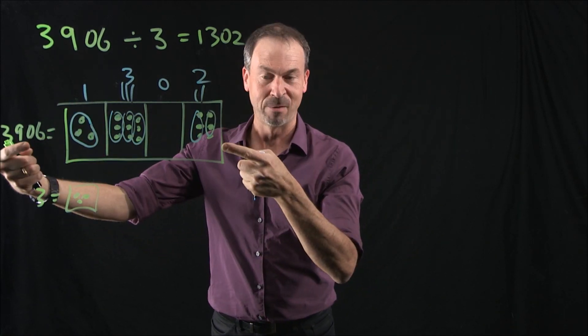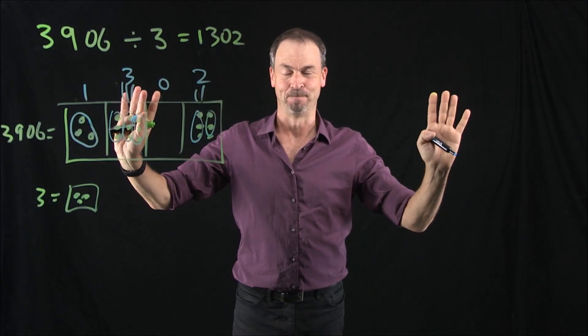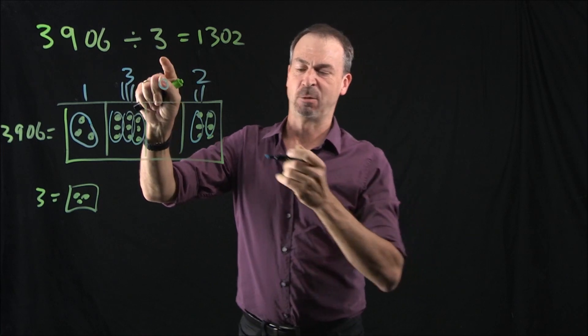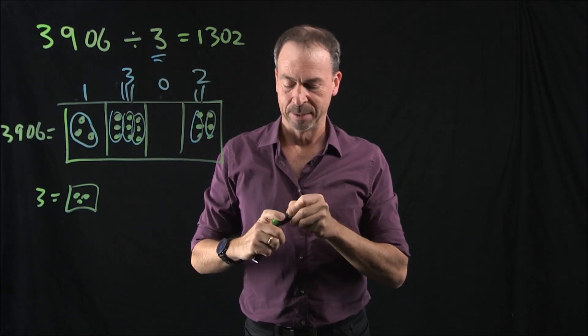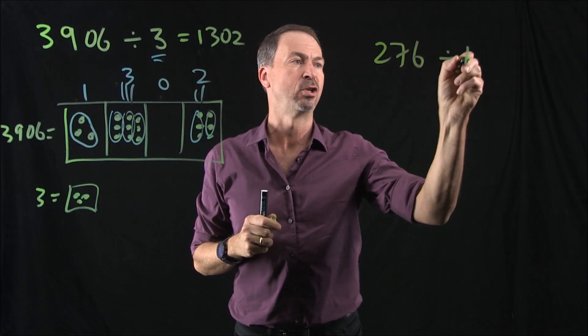Just draw a picture of the number you've got, draw a picture of the groups you're looking for, and go hunt for them. End of story. Kind of fun. Now, this was a nice one. That was a single digit division. Let's do a more complicated one. Let's do, say, 276 divided by 12.